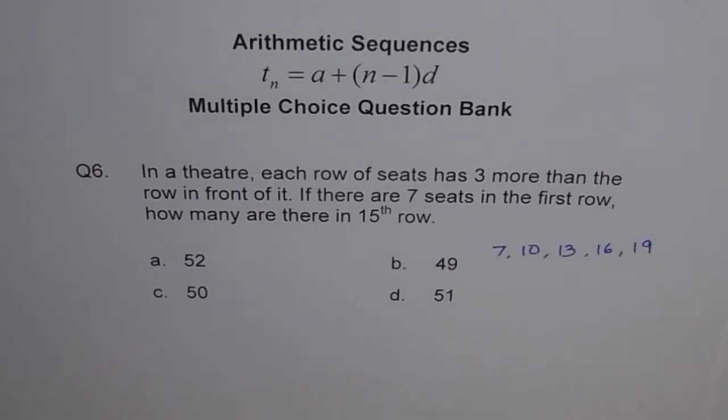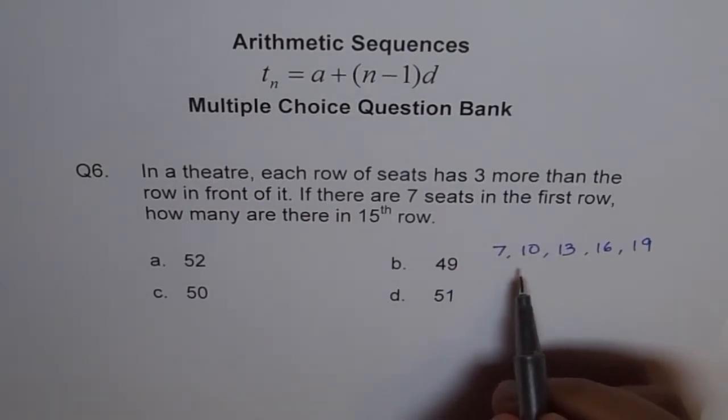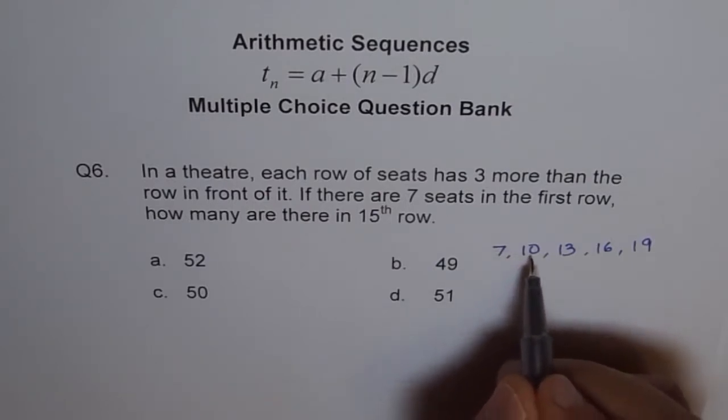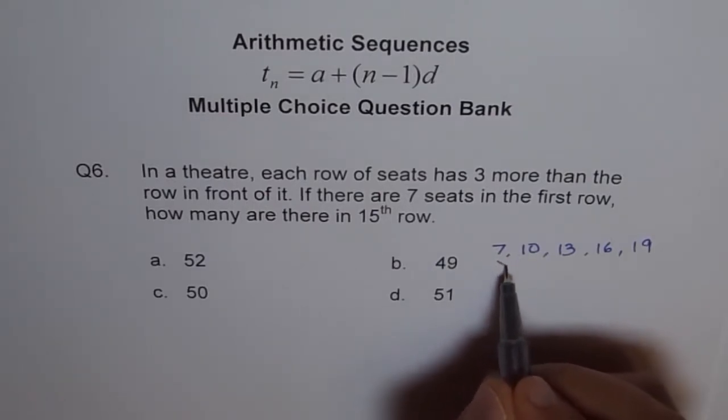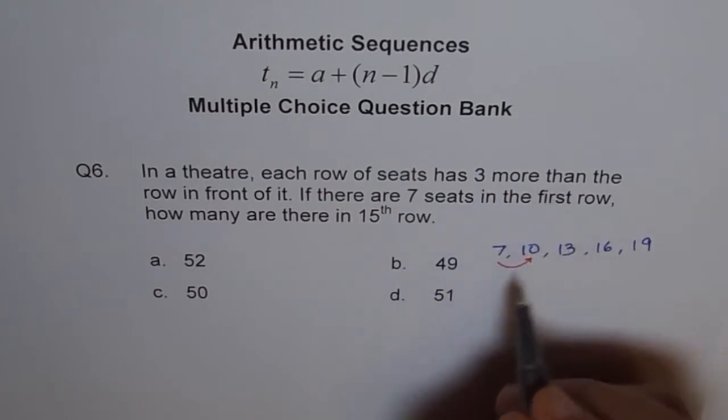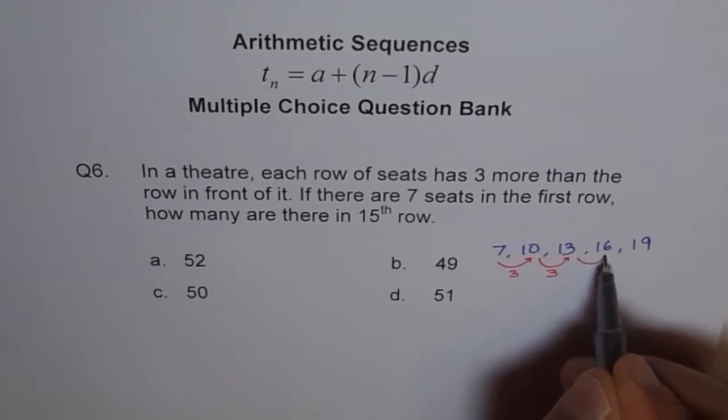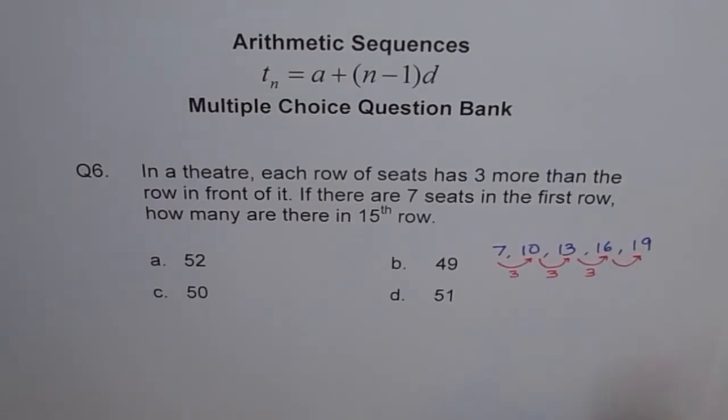It works like this. In arithmetic sequences, every successive term has a constant difference with the previous one. Now, here if you see, what is 10 minus 7? 10 minus 7 is 3, right? 3 more, correct? It has to be 3. 3 more at 3, right? Now, it goes up by 3 every time.